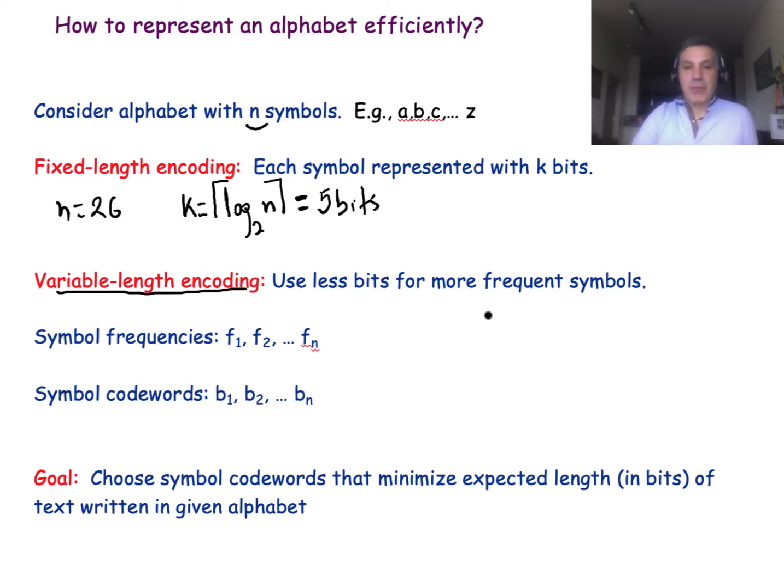For example, for the letter A in the English alphabet, people have measured that the letter A occurs at about 18.3% of the time if I give you a large corpus of English text. While a letter such as Z appears only 0.1% of the time. So clearly, it doesn't make sense to use the same number of bits for A and for Z. Perhaps for A, you could only use one bit, let's say the bit 0, while for the letter Z, you may use something that is much longer.